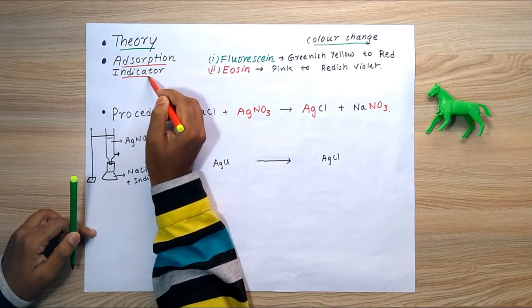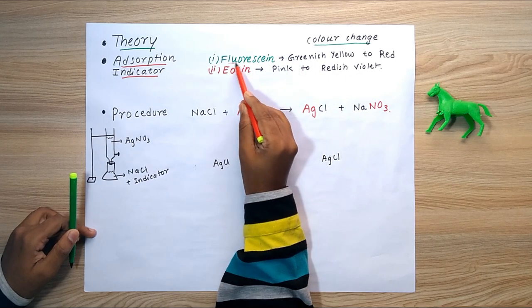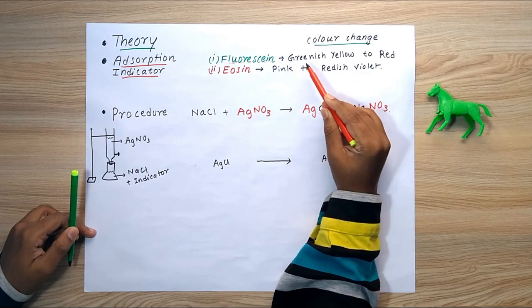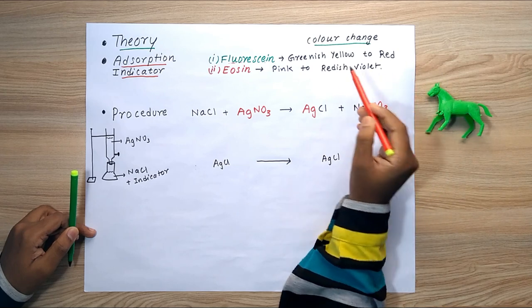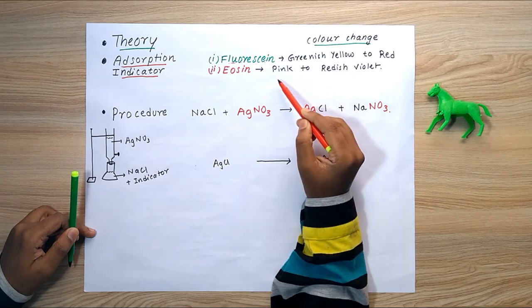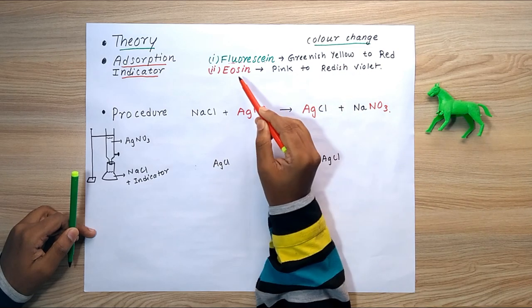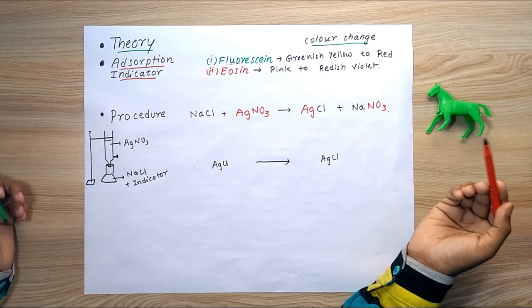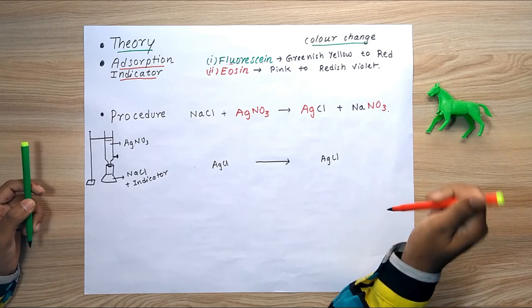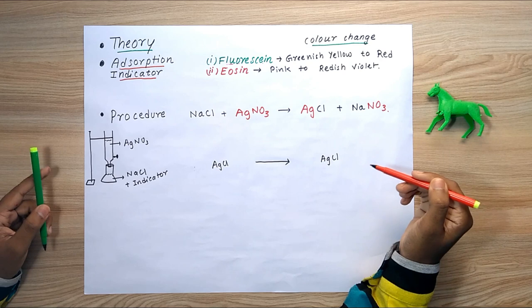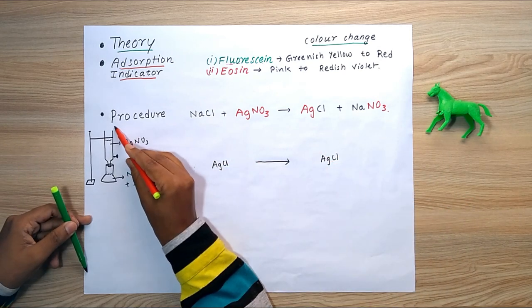The adsorption indicators we use are fluorescein and eosin. Fluorescein gives a color change from green to red — initial green to final red — and eosin gives a change from pink to reddish violet. There are other indicators as well, which will be linked in the description below.